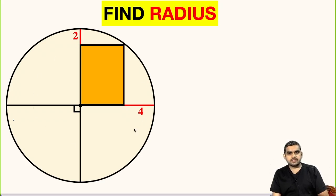In this question we have to find the radius of this circle. Here let us assume the radius to be small r.